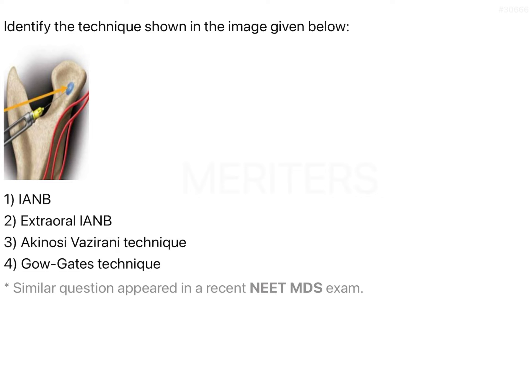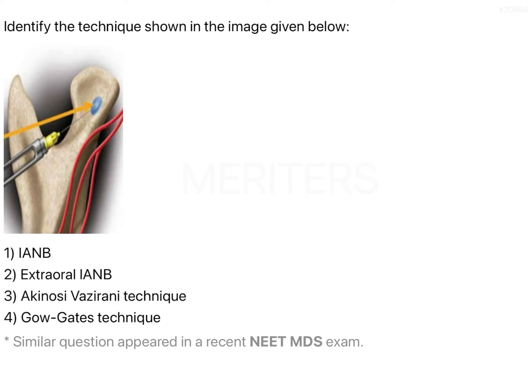In the image — I've enlarged it for you — you can see a needle alongside a gross anatomical picture of the mandible. This is the condyle of the mandible, and the needle has been taken all the way up to the condyle, with local anesthetic being deposited in that region. The question is asking which technique uses the condyle or neck of the mandible as the important landmark for giving anesthesia.